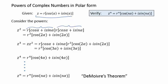But by the product rule, we remember to multiply two complex numbers, we would multiply their moduli, to get r squared, and add the arguments.